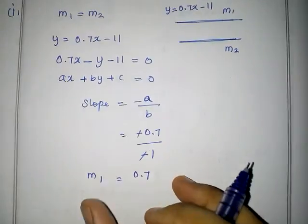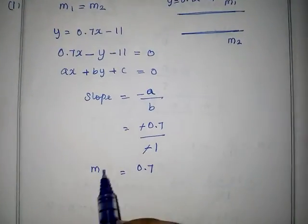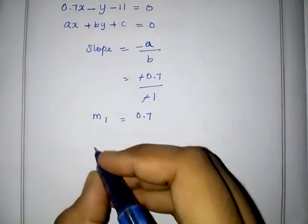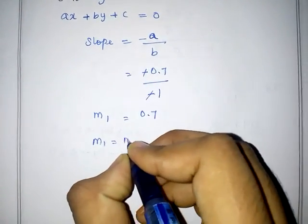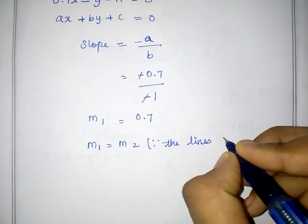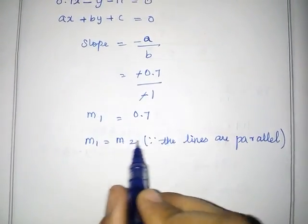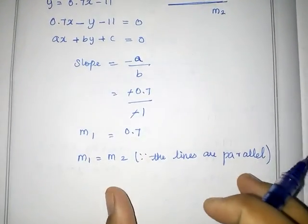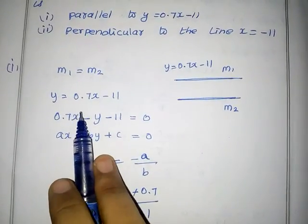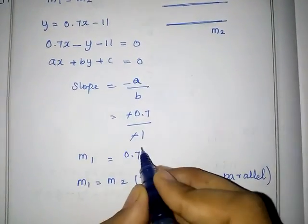Since M1 is equal to M2, and this is a parallel line, therefore the lines are parallel. The slope of the parallel line equals M1, and M2 equals 0.7. So the slope of the line parallel to y = 0.7x − 11 is 0.7. This is the answer.